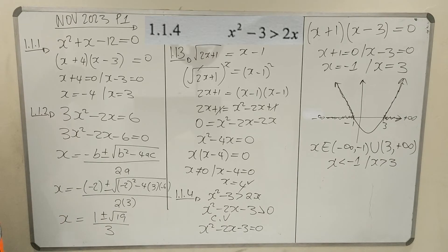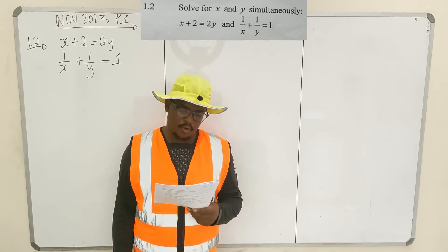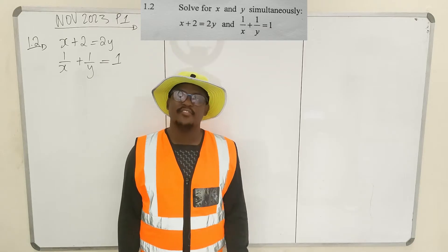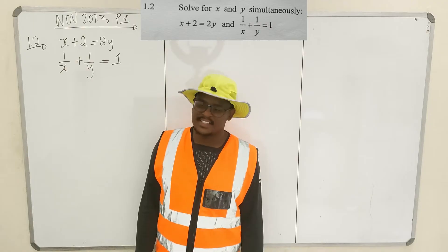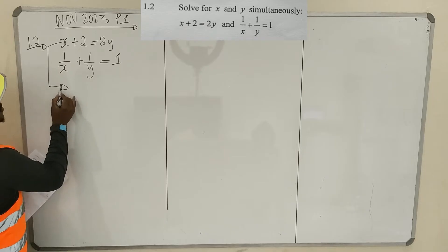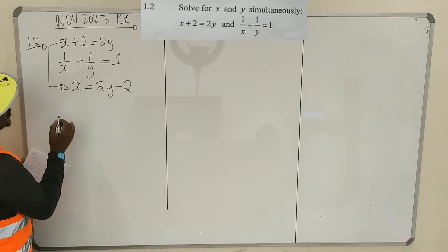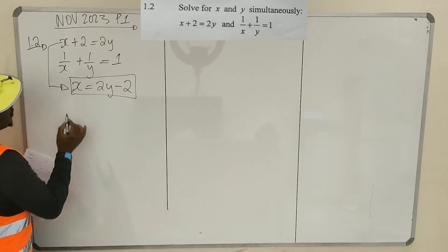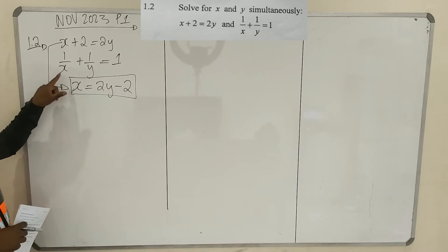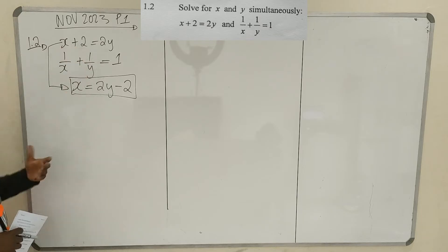Now we're doing 1.2 — solve for x and y simultaneously. We are given two equations. The easiest approach: from the first equation, solve for x to get x = 2y - 2. Then it would be nice to simplify the second equation first before substituting.